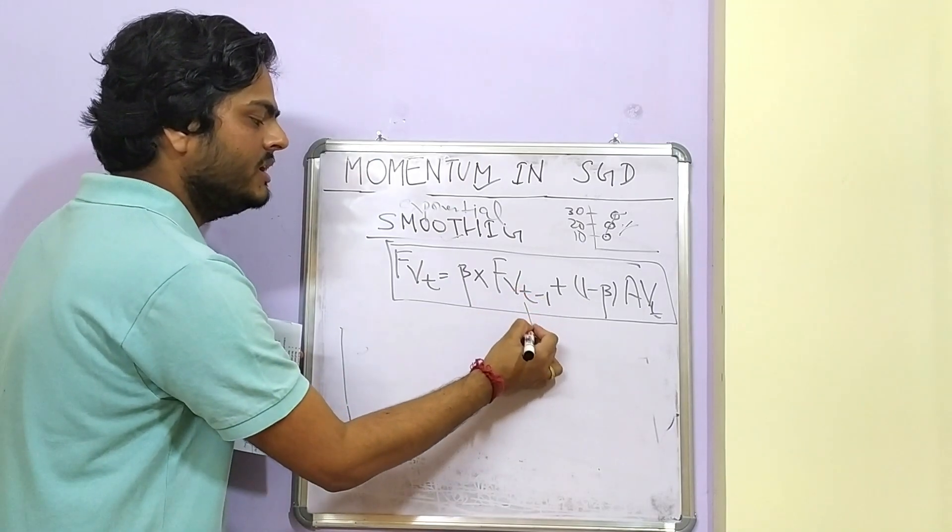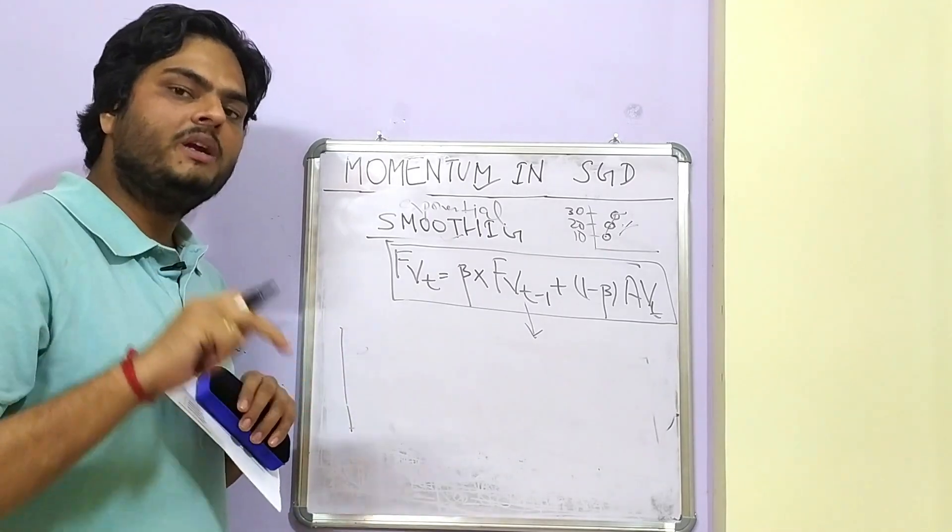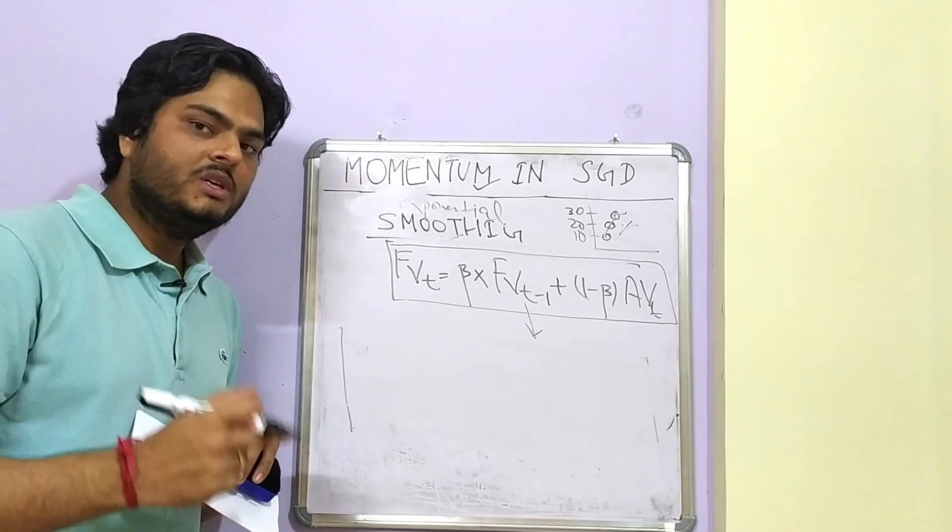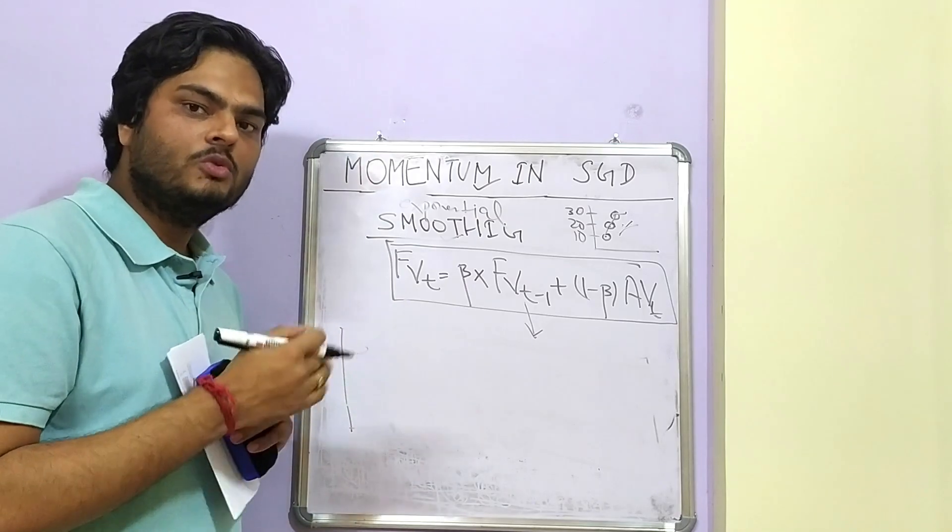What this equation is saying is at any time t, the forecasted value will be beta times previous forecast value plus 1 minus beta times actual value at that time. When you expand this, so this is again a forecasted value. You can expand this with the same equation.